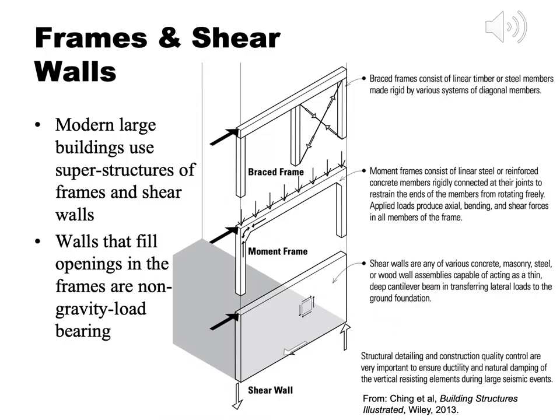So far the discussion has covered systems in which the walls hold up the floors — that is, where the building superstructure and enclosure are integrated into one system. Many modern buildings use frames, either braced or moment frames, to provide the superstructure and then add a separate enclosure that does not participate in transferring gravity loads. Shear walls may also be part of the superstructure of modern buildings and provide only some of the enclosure functions, rarely all of them.